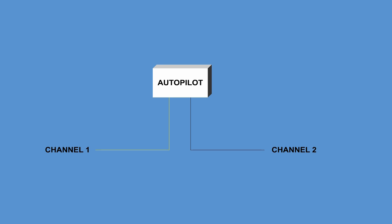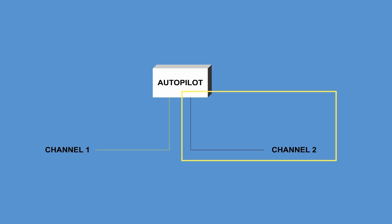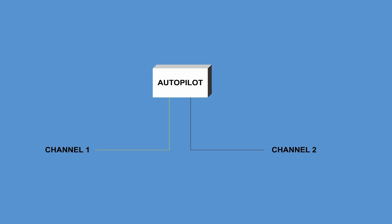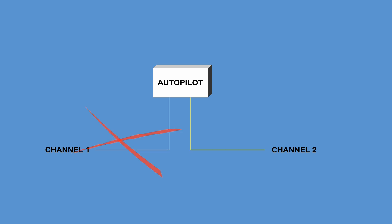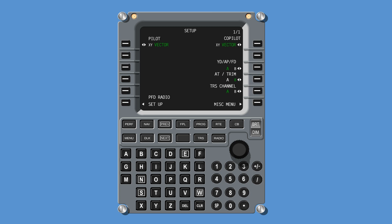The autopilot has two channels, and one channel works as a hot spare channel. The system alternates the channels automatically if the active channel fails. The pilot can alternate the autopilot channels manually on the setup MCDU page.